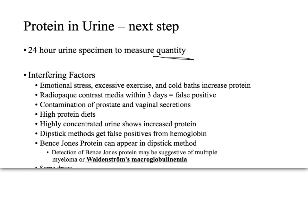There are several interfering factors that can falsely increase urinary protein. Interestingly, taking a cold bath can increase protein in the urine. Radio-opaque contrast imaging within the last three days will give a false positive for proteinuria. Contamination from the prostate or vagina can also cause false positives. Additionally, a high-protein diet can lead to protein appearing in the urine.